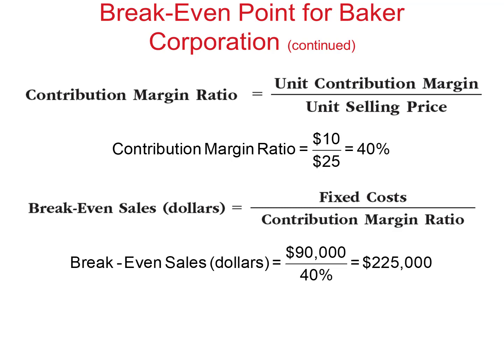We can also use the contribution margin ratio to find the break-even point in total sales dollars. Taking $10 contribution margin divided by $25 sales price gives us a 40% contribution margin ratio. Dividing fixed costs of $90,000 by the 40% contribution margin ratio gives us $225,000 — the same result. Whether we use the contribution margin per unit or the contribution margin ratio, the end result is the same: one is reported in units, the other in total sales dollars.